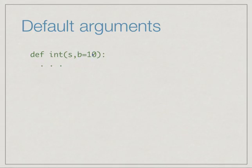If the person omits the second argument, then it will automatically take the value 10. Otherwise it will take the value provided by the function call.